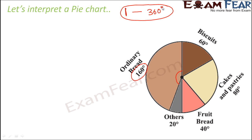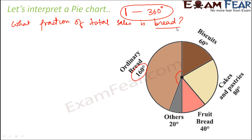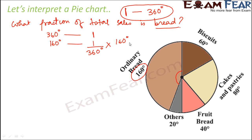Knowing this relation, we can find the relationship between a fraction and its corresponding angle or degrees. For bread, the angle is given as 160 degrees. We know that 360 degrees corresponds to the entire circle — the complete pie chart. So 160 degrees would correspond to 160 divided by 360, which is 4 by 9. So 4 by 9 is the fraction of total sales that is bread.